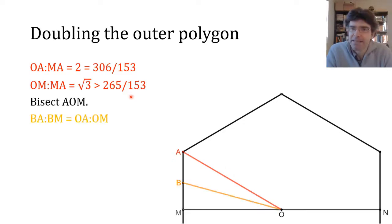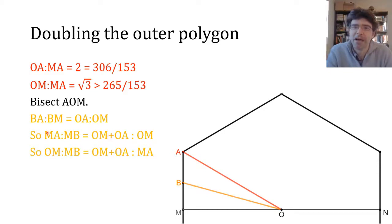Next what we do is bisect the angle with the line OB. So then MB would be half the side length not of a hexagon but now of a dodecagon, so it's like doubling the number of sides of the polygon. Now as you can find in Euclid's Elements, we've got BA to BM is equal to OA to AM, famous result about angle bisectors. Archimedes then extends this slightly. MA to MB is like adding 1, so OM plus OA to OM, and therefore we can take the alternate terms: OM to MB is equal to OM plus OA to MA.